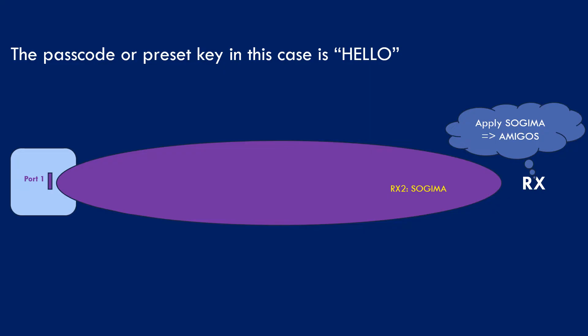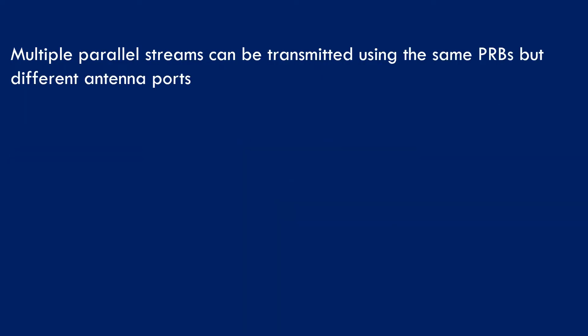In 5G networks, this is realized by sending DMRS (Demodulation Reference Signal) and PDSCH via the same antenna port. The UE can decode information about the propagation channel by reading the DMRS first, and applying that information to decode the actual data transmitted on PDSCH. These reference signals are sequences known to the UE; it compares the received version with the known reference to estimate the propagation channel, then applies the inverse during demodulation.